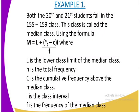Our L is the lower class limit of the median class. We have N is the total frequency. We have C, which is the cumulative frequency above the median class. This one is very important for you to understand because there are some learners who might confuse the C, whereby you take your C to be the cumulative frequency in the median class. But we are saying that C is the cumulative frequency above the median class. We have the I, which is the class interval, and we have our F, which is the frequency of the median class.